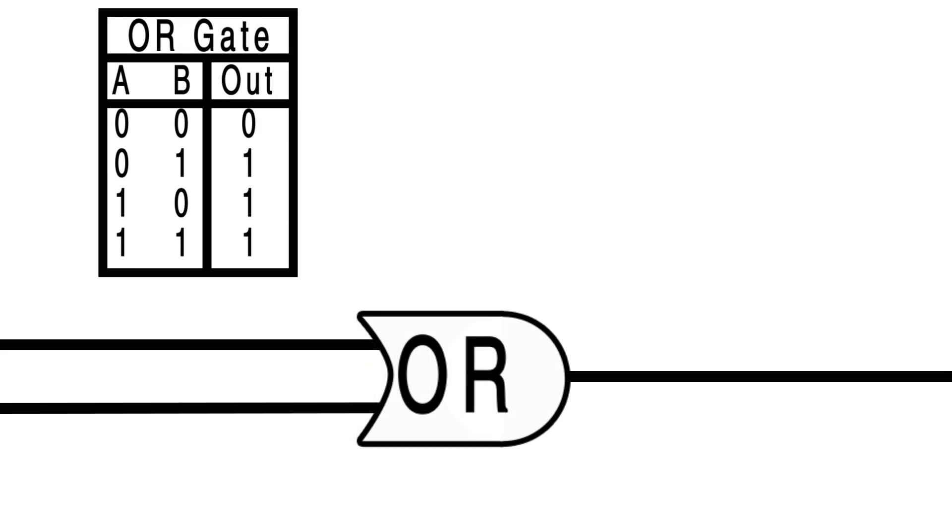And then an OR gate will be satisfied as long as one node or the other node or both nodes have a 1 input into them. The only time it's going to output a 0 is when both these inputs are 0. So here's what its chart looks like.